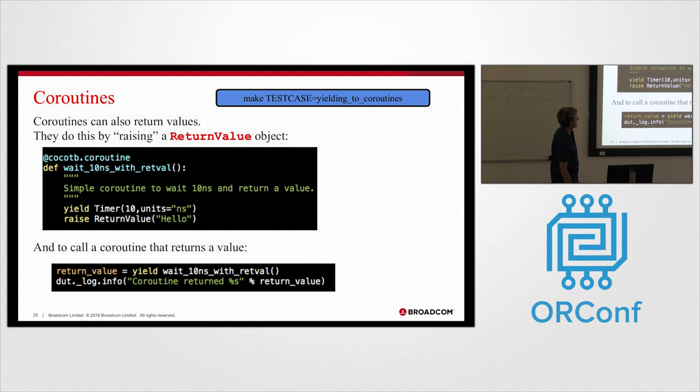You can also return values from coroutines. You do this by raising a return value - this is another Cocoa TB class. And so this is the syntax here for getting a value back from a coroutine.